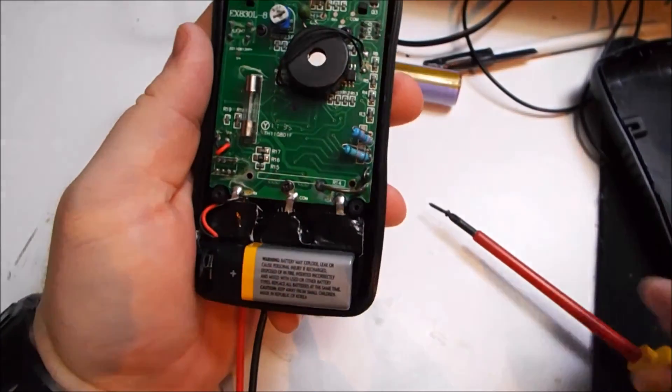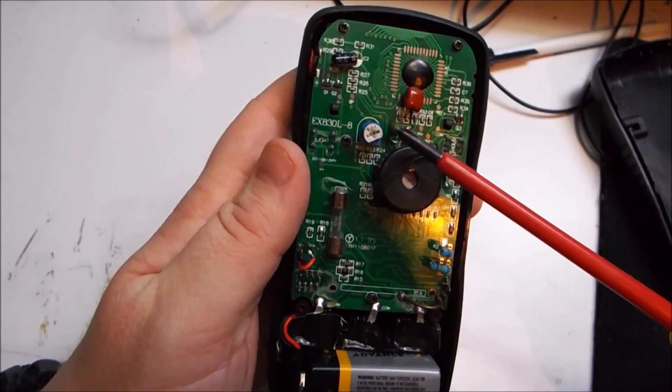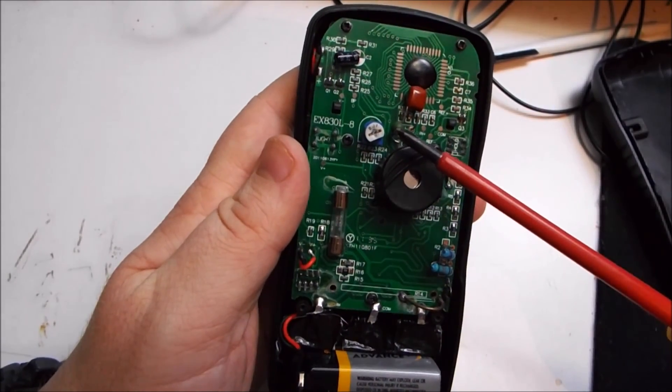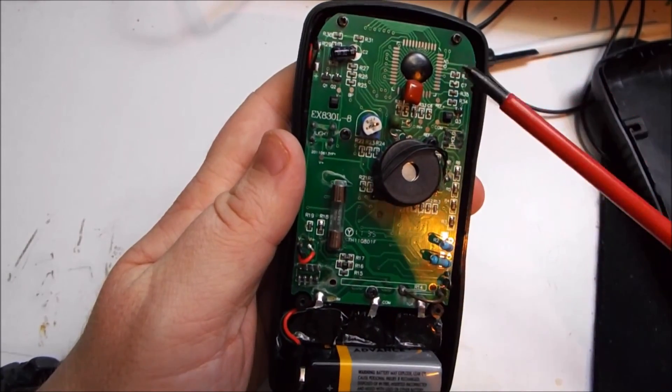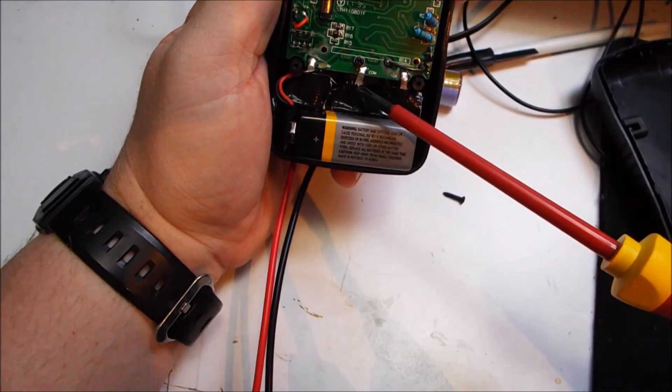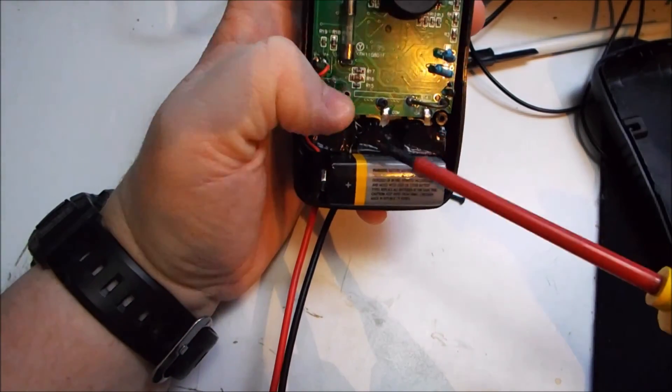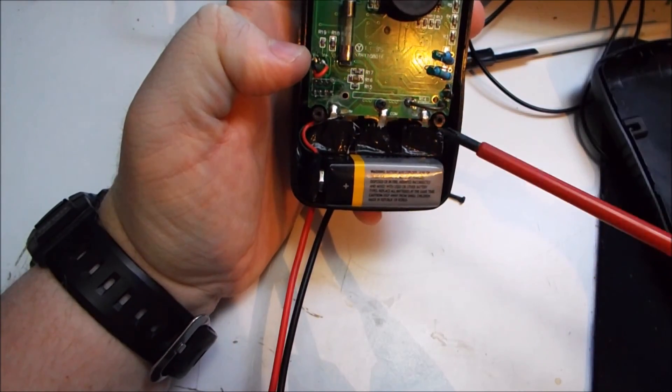So pretty much what you want to do to calibrate it is you want to play around with this little part here, the 2JI. Don't worry so much about touching anything else. I just put some tape over these ports, just so that it doesn't move when I put the pins in.